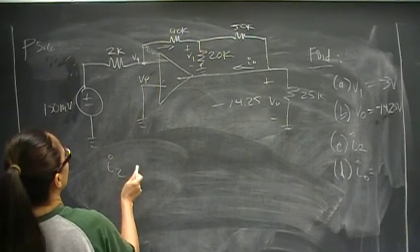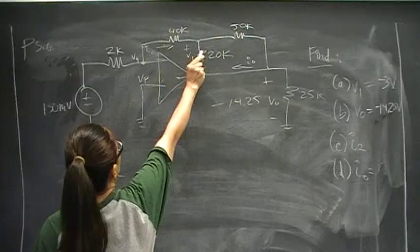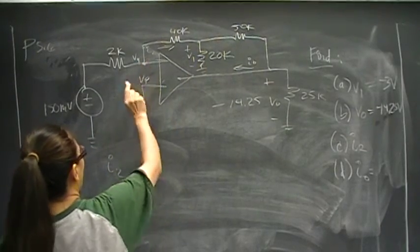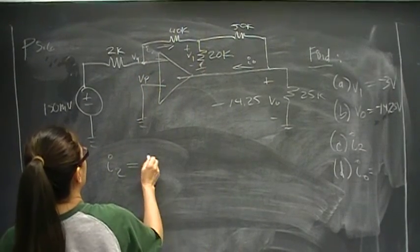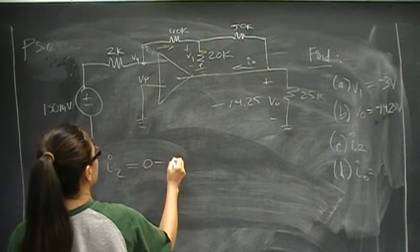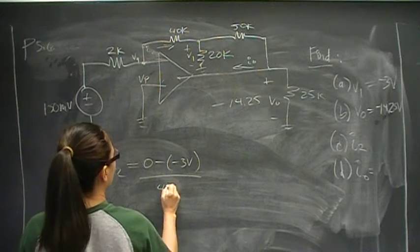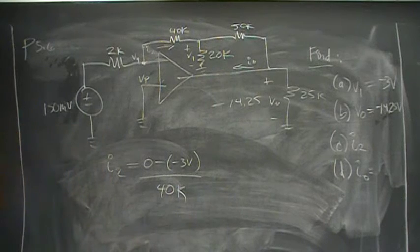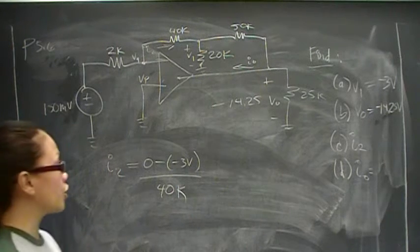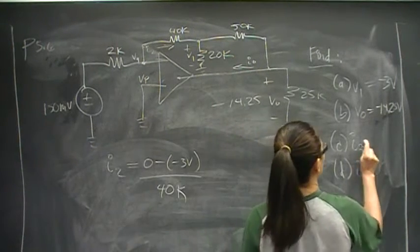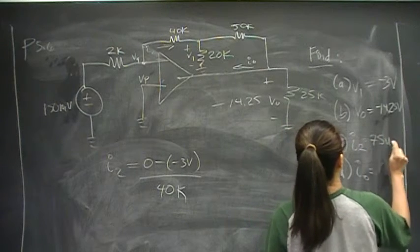I2 is defined to be positive that way, so we're going to go in the direction it's being defined. So 0 minus negative 3 over 40K. Put that into your calculator, and you should come up with I2 is equal to 75 microamps.